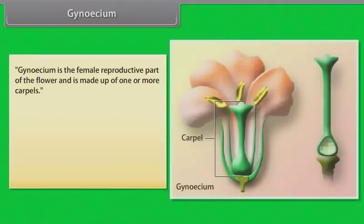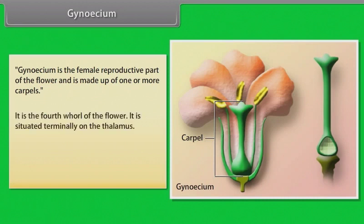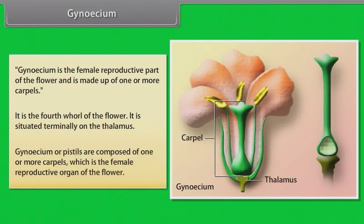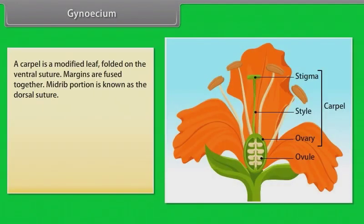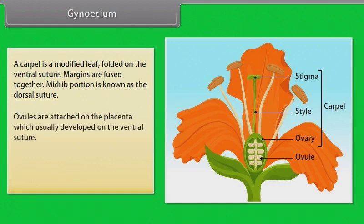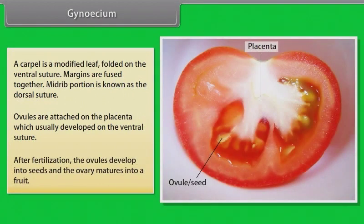Gynoecium is the female reproductive part of the flower and is made up of one or more carpels. It is the fourth whorl of the flower situated terminally on the thalamus. A carpel is a modified leaf folded on the ventral suture. Margins are fused together; the midrib portion is known as the dorsal suture. Ovules are attached on the placenta, which usually develops on the ventral suture. After fertilization, ovules develop into seeds and the ovary matures into a fruit.